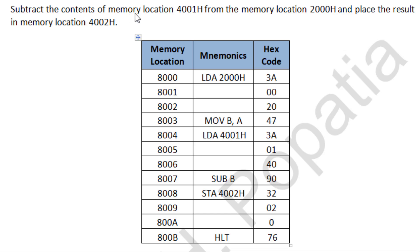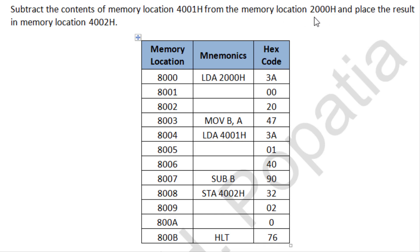Hello everyone, welcome to the microprocessor 8085 practical series. In the previous session we studied some basic programs. The first one is: subtract the contents of memory location 4001H from memory location 2000H and place the result in memory location 4002H. We need to perform the subtraction such that the result of 4000H minus the contents of 2000H is placed in 4002H.